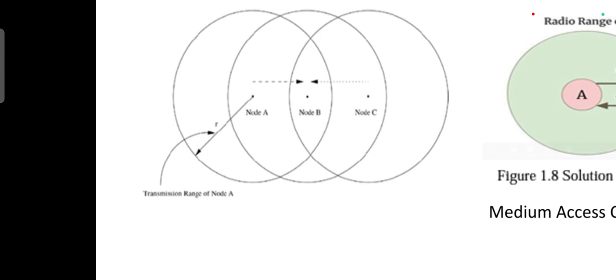If both node A and node C have to transmit data to node B - node A wants to transmit data to node B and node C also wants to transmit data to node B at the same time.